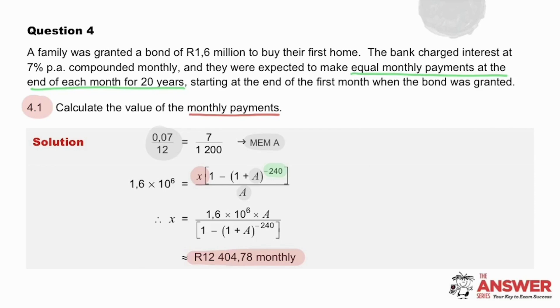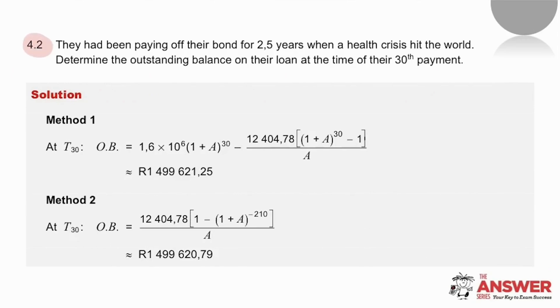The value of the monthly payments is needed in the next part of the question. Remember here to use the rounded off value of X. For 4.2 we are needing to find the outstanding balance two and a half years into paying off their loan. In other words 30 months in or at the time of their 30th payment. Remember for outstanding balance we can choose between two methods depending on the information given. In this case we have enough information for either option.